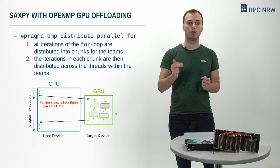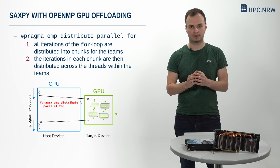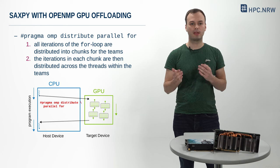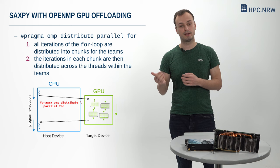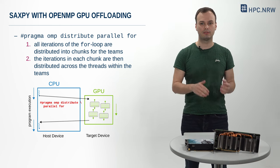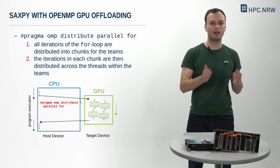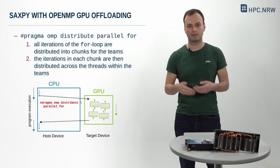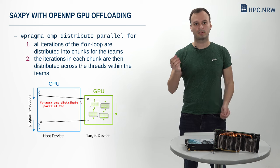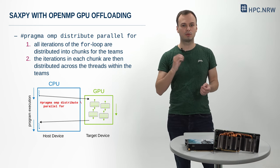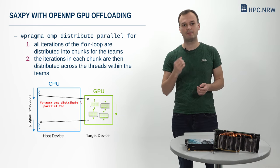The last line of the OpenMP directives, pragma OMP Distribute Parallel for, is a composite construct. When this directive is encountered, all iterations of the for loop are first distributed into chunks for the GPU teams. Then the iterations in each chunk are further distributed across the GPU threads within the teams to achieve massive parallelization — for example, hundreds of thousands of GPU threads running the SAXPY computation simultaneously. Because of such massive parallelism, it is expected to obtain high performance for a SAXPY, especially when the involved vectors become large enough.